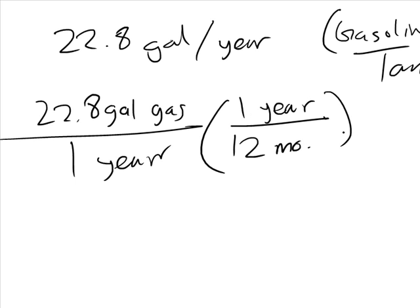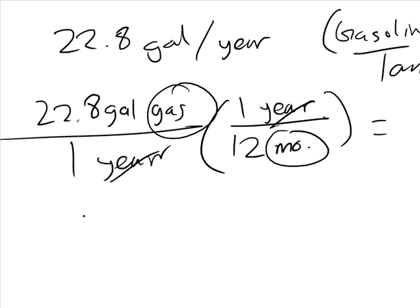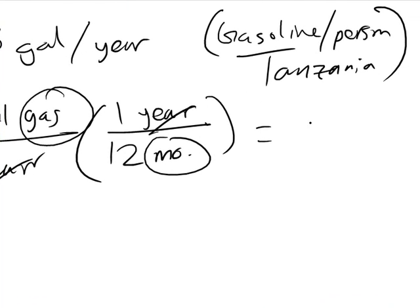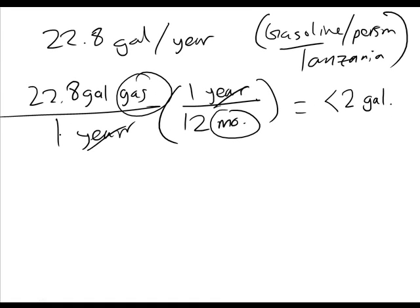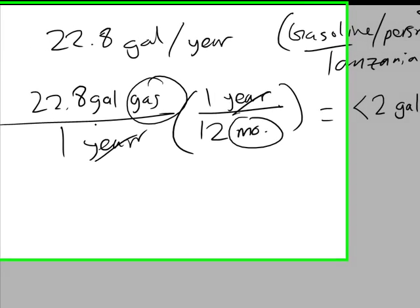This would cancel out years, and we would end up with gas per month left over. So that shows us 22.8 divided by 12. And I would have accepted less than 2 gallons as kind of an estimation. I asked you to round or estimate, so that would have been okay. If you want to do this accurately, you could do this in long division.